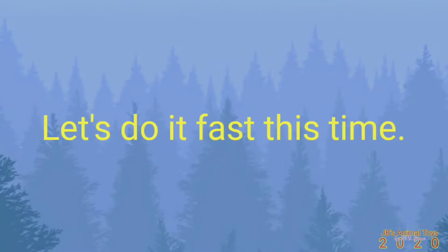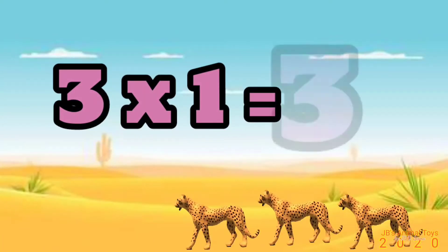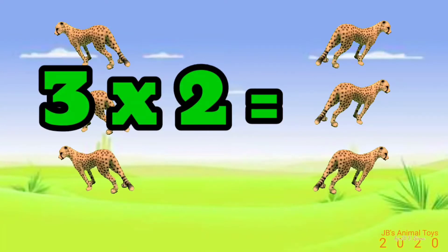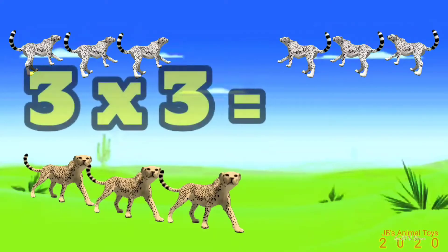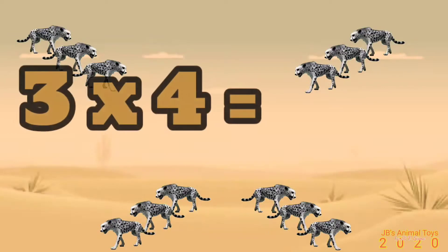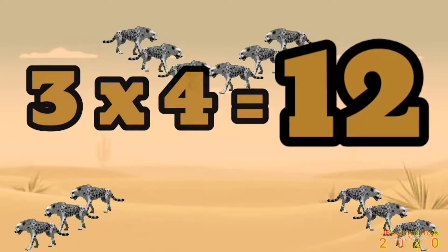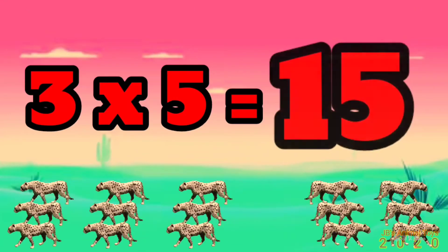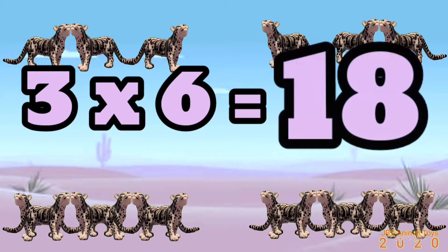Let's do it fast this time! 3 times 1 is 3. 3 times 2 is 6. 3 times 3 is 9. 3 times 4 is 12. 3 times 5 is 15. 3 times 6 is 18.